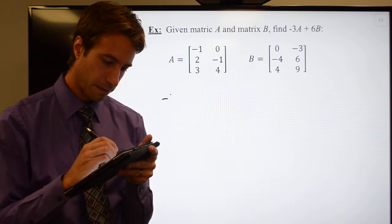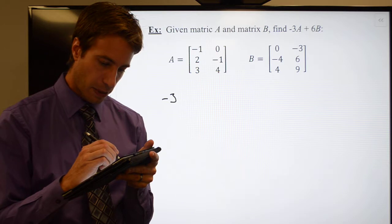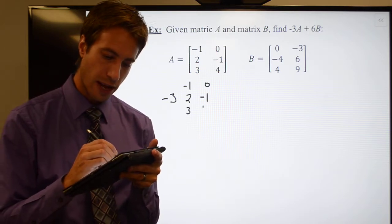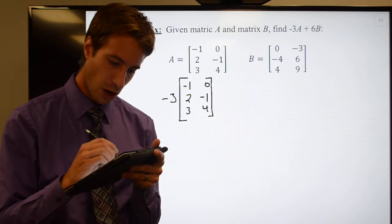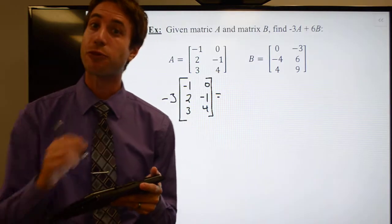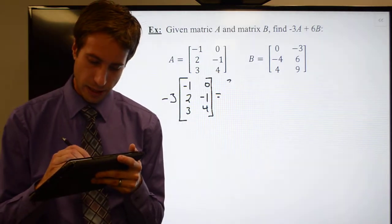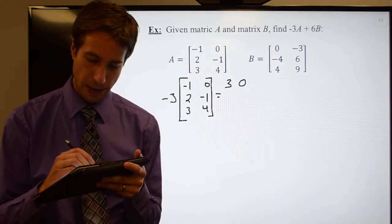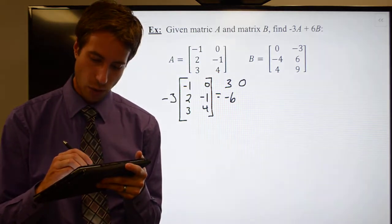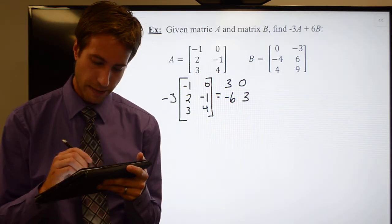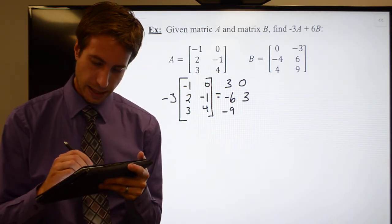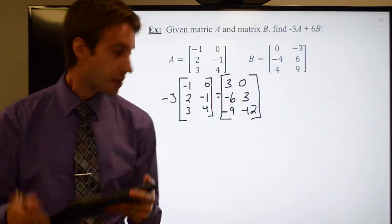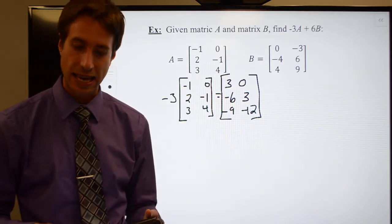So here's what I'm going to have. I'm going to have -3 multiplied by [-1, 0; 2, -1; 3, 4]. Let's see what we get. -3 times -1 would be positive 3. -3 times 0 would be 0. -3 times 2 would be -6. -3 times -1 would be positive 3. That's going to get me -9, and that's going to get me -12. So there's my new matrix. This is matrix A scaled by -3.